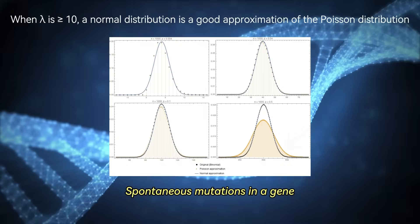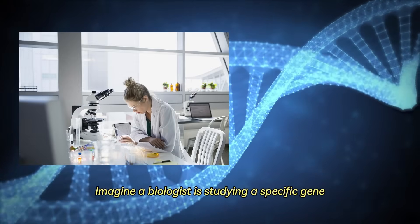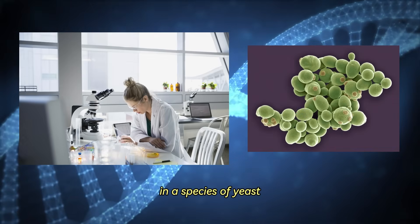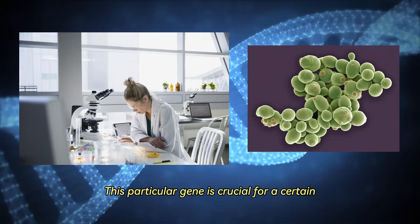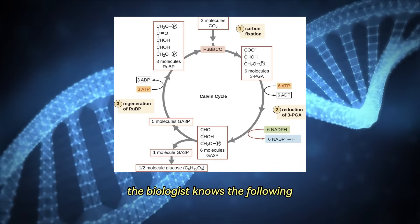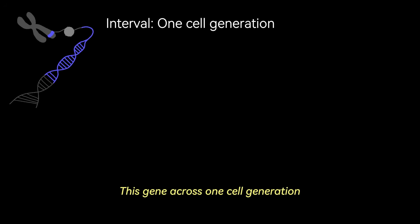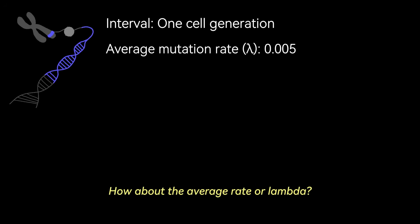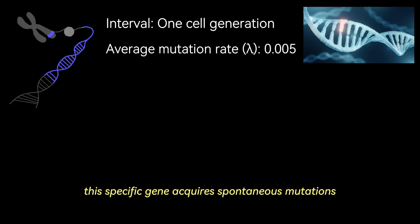Let's take a look at a bit of a contrived example. Spontaneous mutations in a gene. Imagine a biologist is studying a specific gene in a species of yeast. This particular gene is crucial for a certain metabolic pathway. From extensive research, the biologist knows the following. The interval: they are looking at this gene across one cell generation. How about the average rate, or lambda? Under normal laboratory conditions, let's say, without exposure to mutagens, this specific gene acquires spontaneous mutations at an average rate of lambda equals 0.005 mutations per gene per cell generation. This is a very low average, meaning mutations in this specific gene are rare in any single generation, which is typical for maintaining genetic stability.